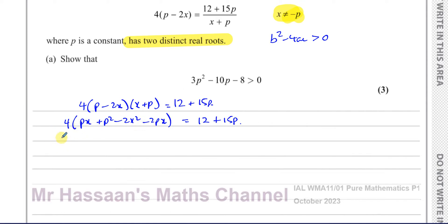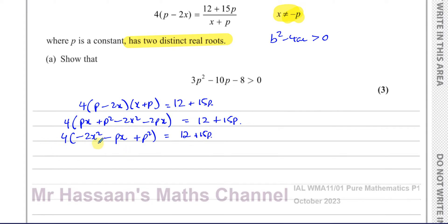Combining like terms: we get minus 2x² and then px minus 2px which is minus px, plus p² equals 12 plus 15p. Now multiply through by 4, giving: minus 8x² minus 4px plus 4p² equals 12 plus 15p.